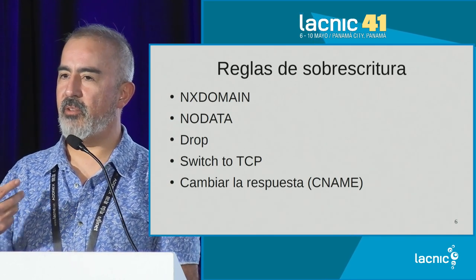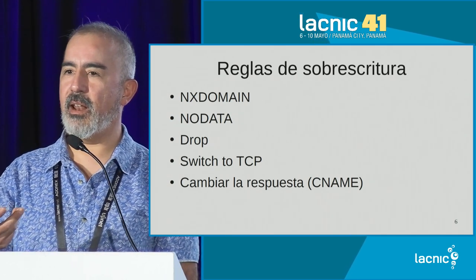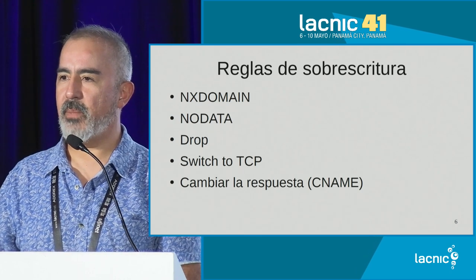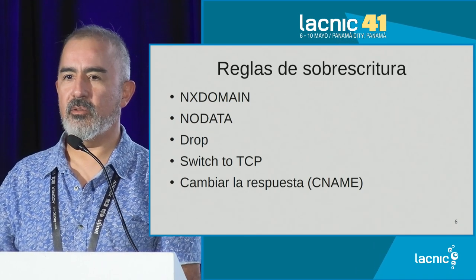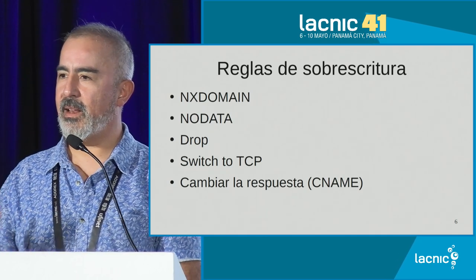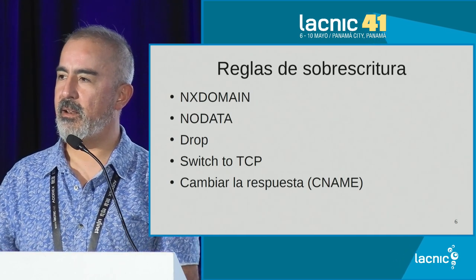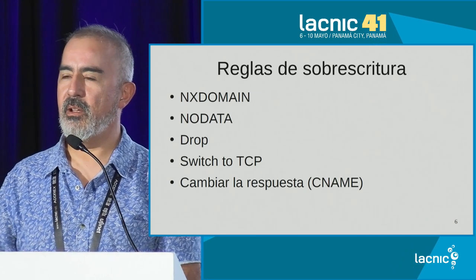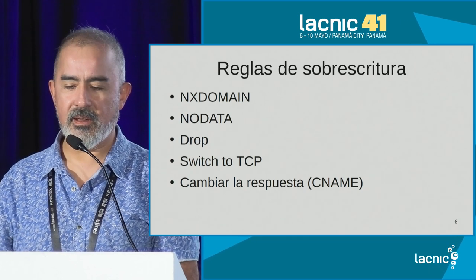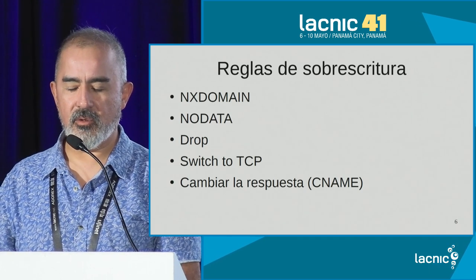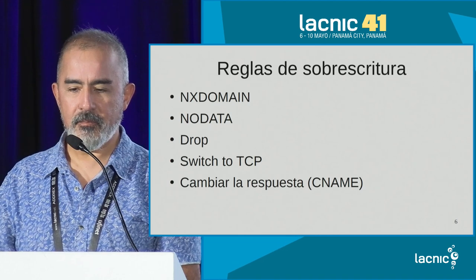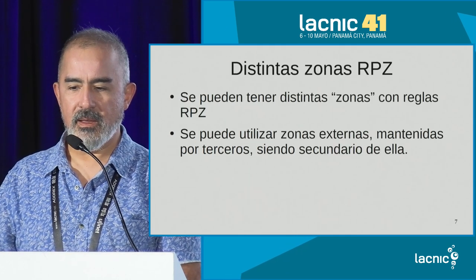And finally, changing the response for what we want. That is good — for instance, if we want to give feedback to the end user that they may be trying to enter a website with malware. We give them a CNAME pointing to an internal page of the ISP, warning that their device may be infected and advising them to get in touch.